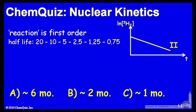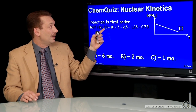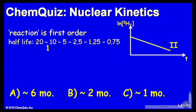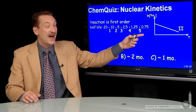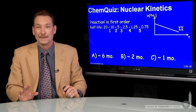If the reaction is first order, how many half-lives does it take to go from a 20 millicurie exposure — which is proportional to concentration — down to less than a millicurie? That takes 20 to 10, that's one half-life, then another, then another, then another, then another. So in five half-lives, you're down to less than a millicurie in your body.